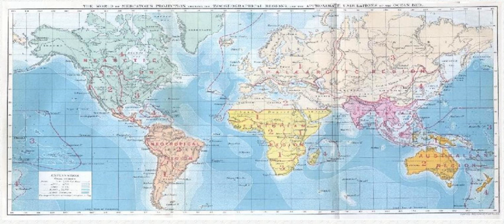The short-term interactions within a habitat and species of organisms describe the ecological application of biogeography. Historical biogeography describes the long-term, evolutionary periods of time for broader classifications of organisms. Early scientists, beginning with Carl Linnaeus, contributed to the development of biogeography as a science.